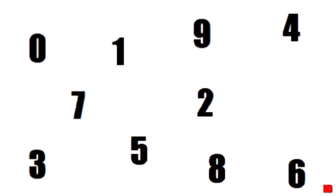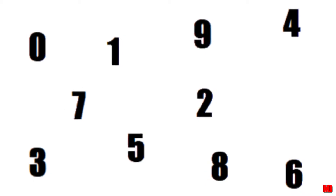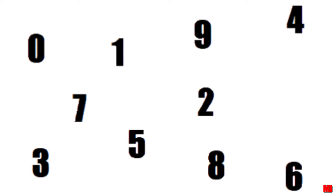The decimal number system is the base ten number system that we use every day. It is called decimal because there are ten digits: 0, 1, 2, 3, 4, 5, 6, 7, 8, 9. We can create numbers bigger than 9 using combinations of these ten digits.